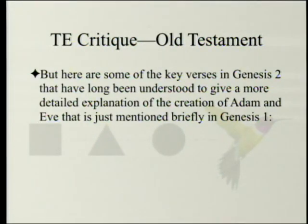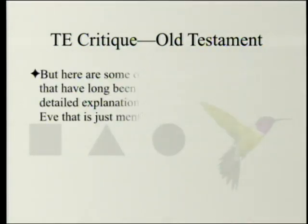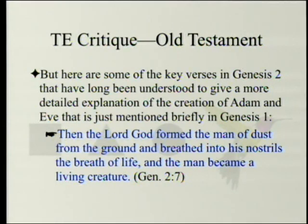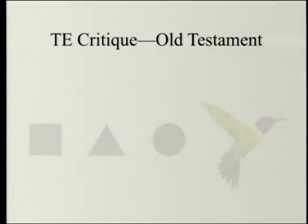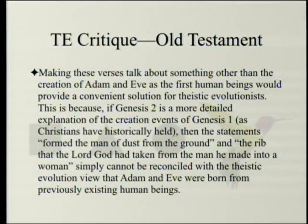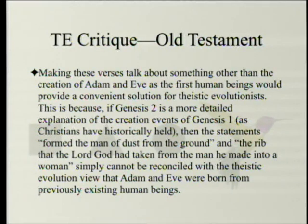Key verses in Genesis 2 have long been understood to give a more detailed explanation of the creation of Adam and Eve mentioned briefly in Genesis 1: 'Then the Lord God formed man of the dust of the ground and breathed into his nostrils the breath of life, and the man became a living creature.' And: 'The Lord God caused a deep sleep to fall upon the man, and while he slept took one of his ribs and closed up its place with flesh, and the rib the Lord God had taken from the man he made into a woman and brought her to the man.' Making these verses about something other than the creation of Adam and Eve as the first humans would provide a convenient solution for theistic evolutionists, since these statements simply cannot be reconciled with the view that Adam and Eve were born from previously existing human beings.